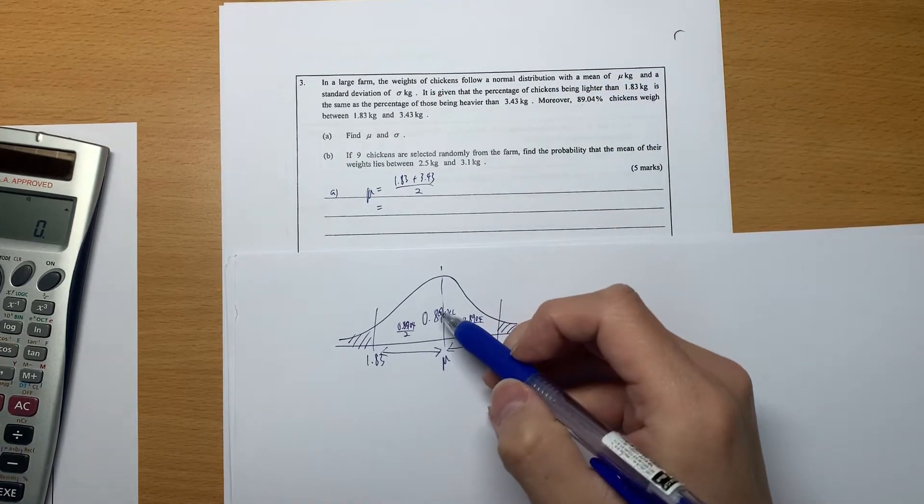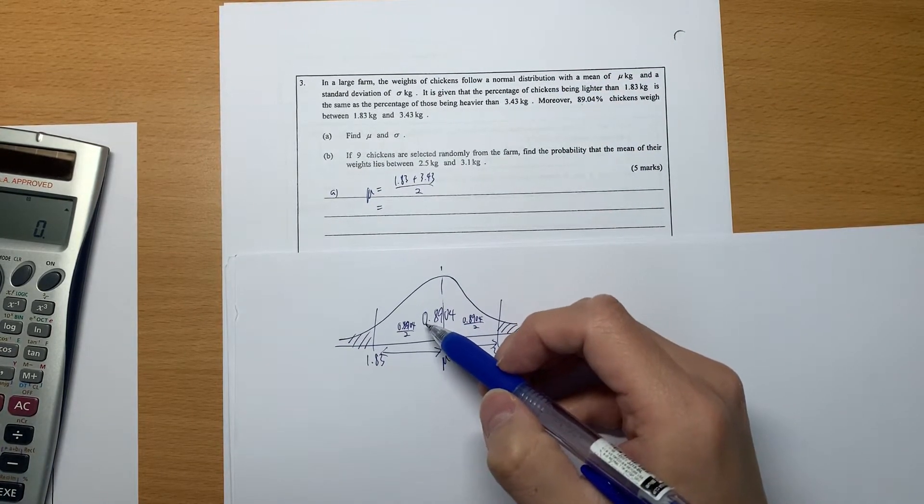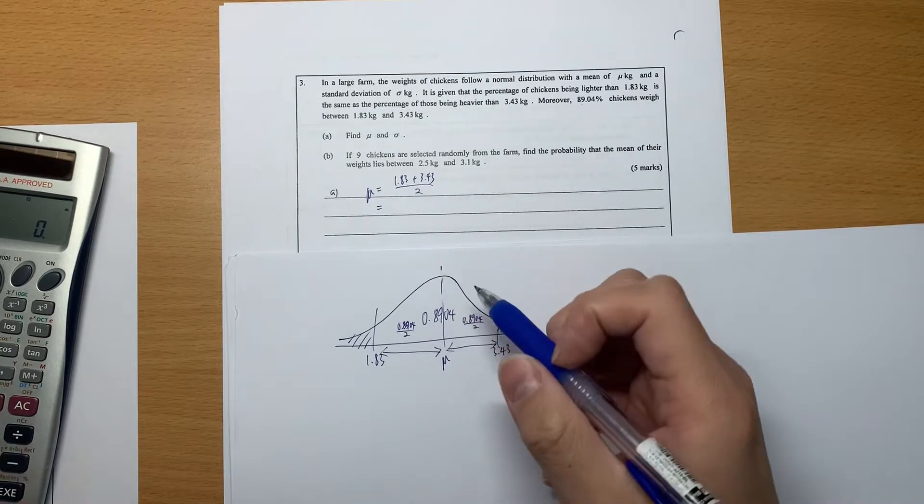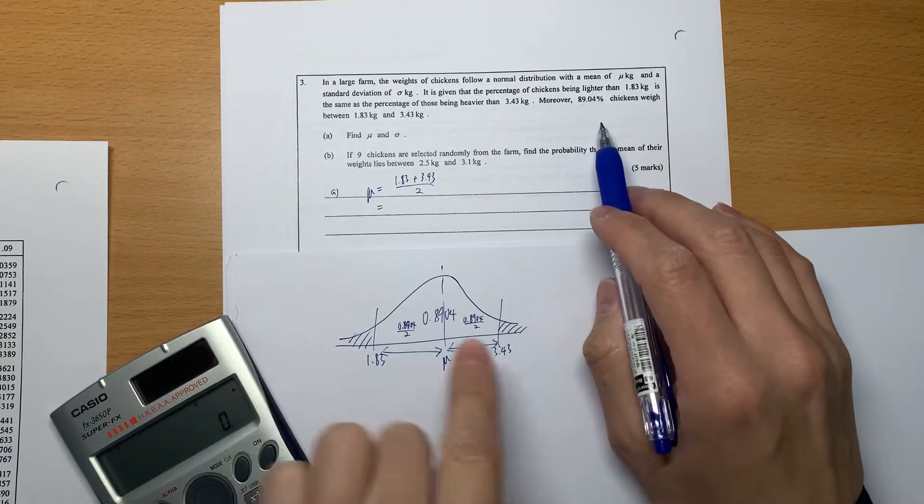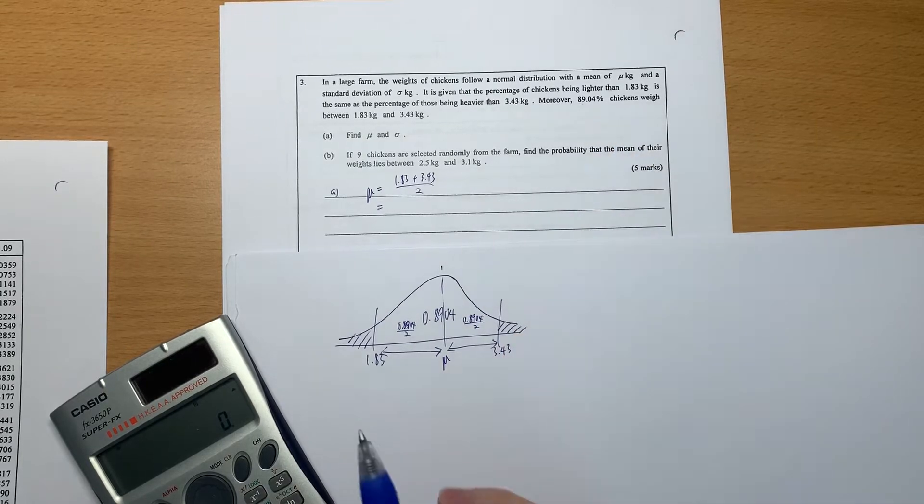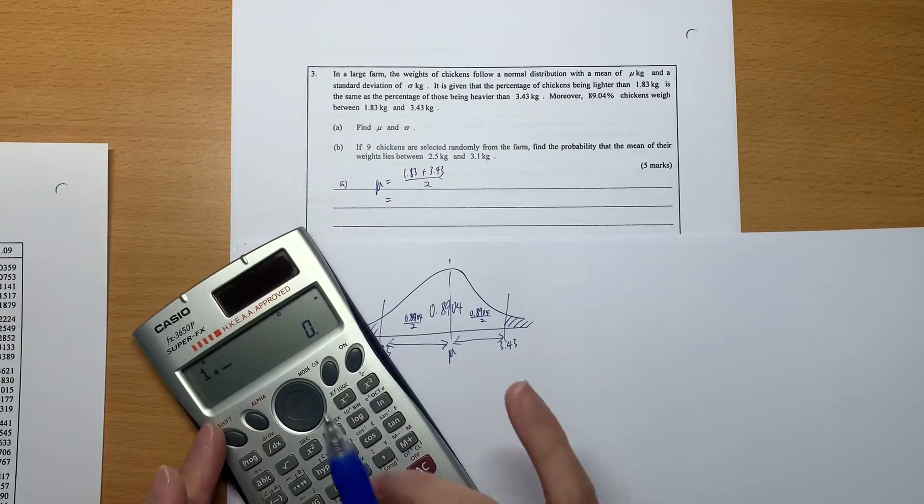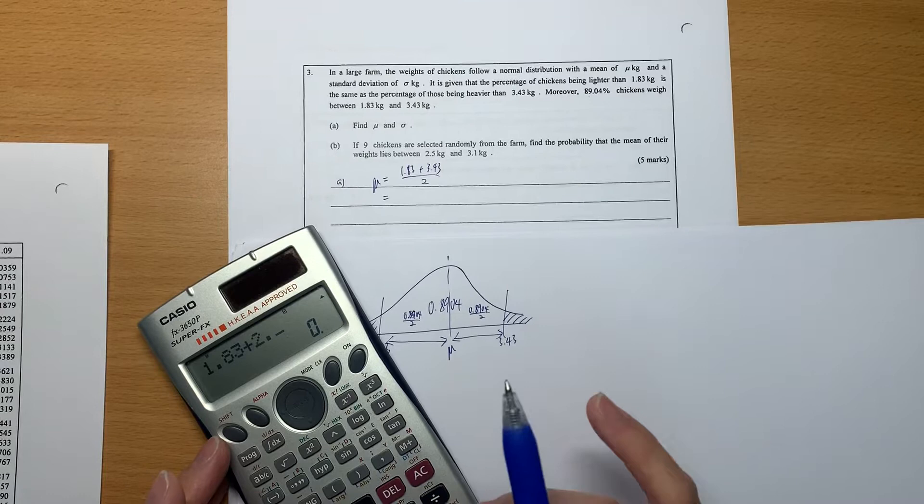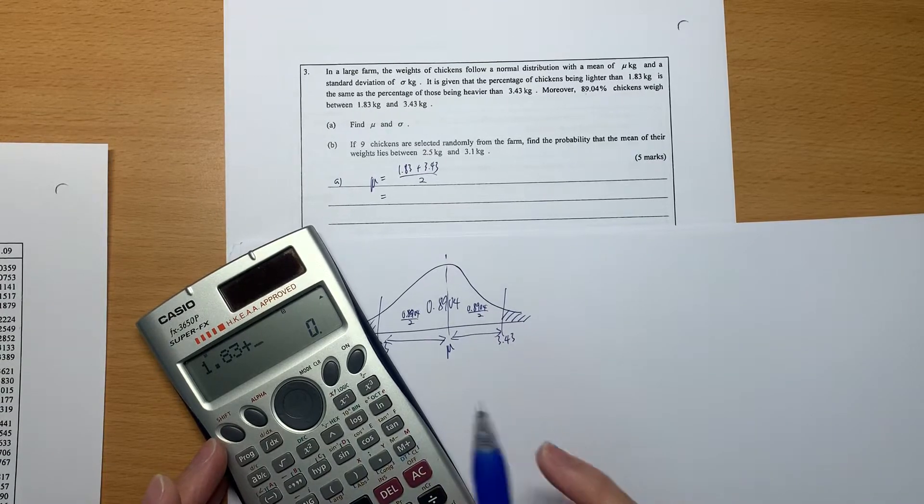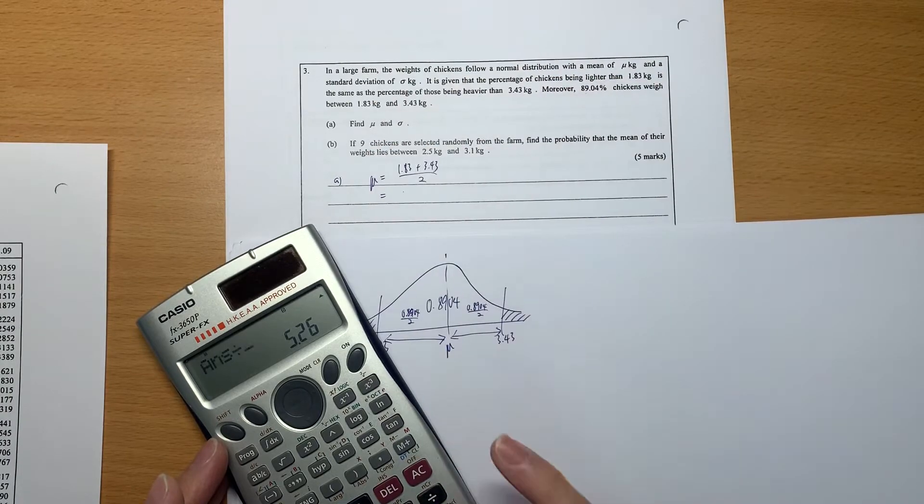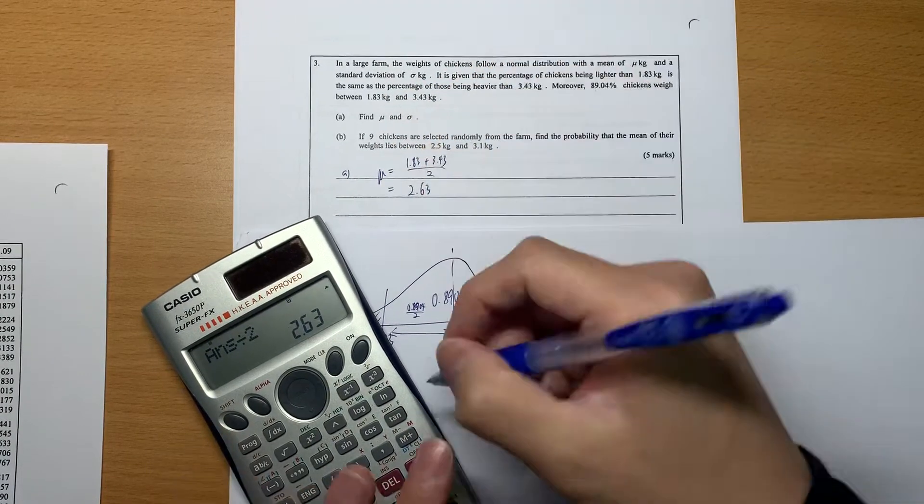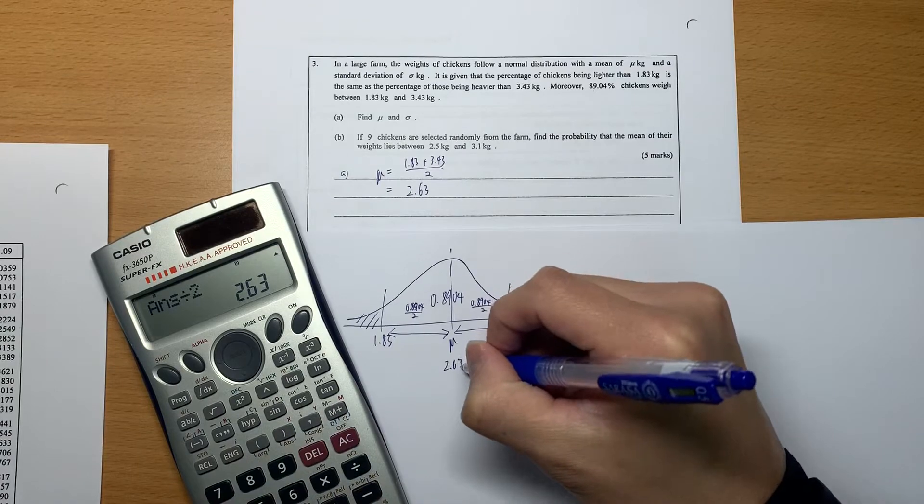Sometimes, if the left hand side is smaller or bigger, then you can't use this method. It's just because they say the left hand side area and right hand side area are the same. So 1.83 plus 3.43 divided by 2 is 2.63. The midpoint is 2.63.